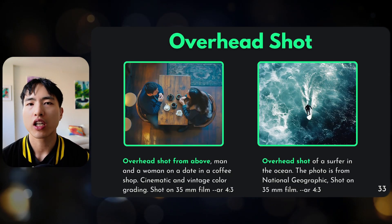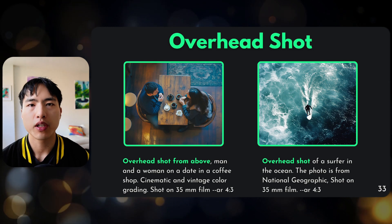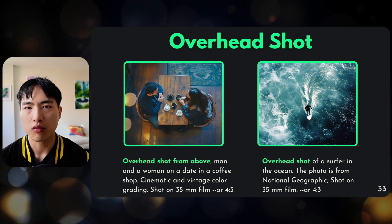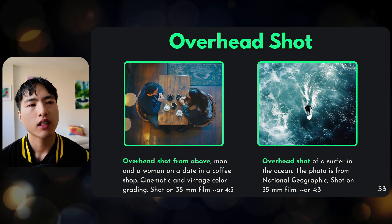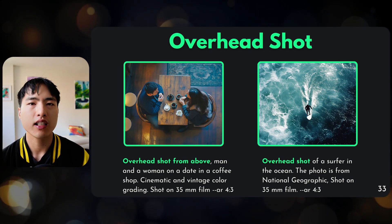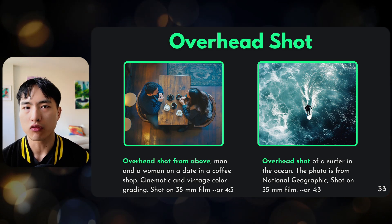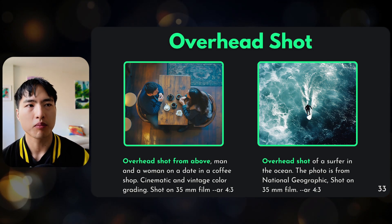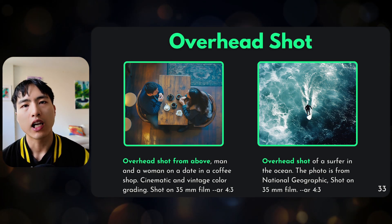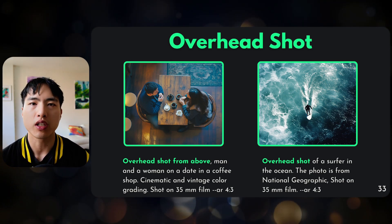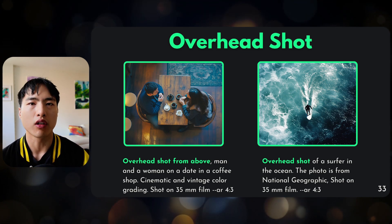The overhead shot places you directly above the subject and points the camera down. It makes you feel more detached from what's going on and gives you a more objective view of the environment. Like I said, the details you include matter a lot — in the surfer image, I just asked for an overhead shot, but if I had also included specific details about the person's face, it would have focused more on the head and torso instead.